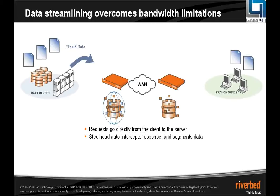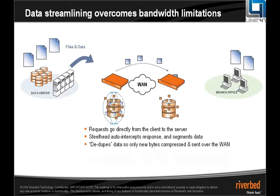At this point, we're just looking at patterns of data — zeros and ones. We're not interested in application types, protocols, or file names. We're purely looking at patterns of binary data. We can then send the data across the network, applying some compression to reduce the amount of traffic.